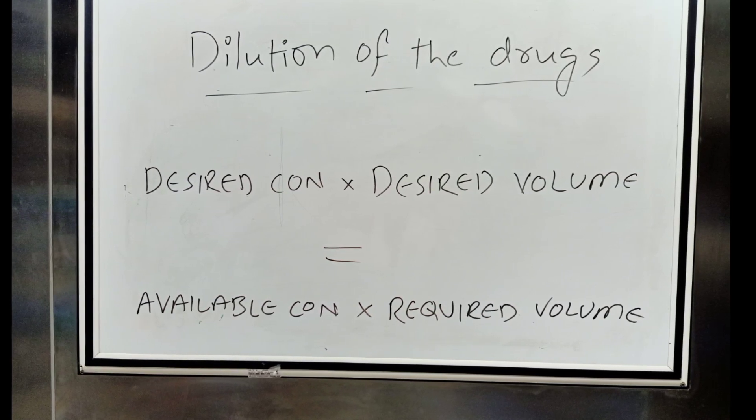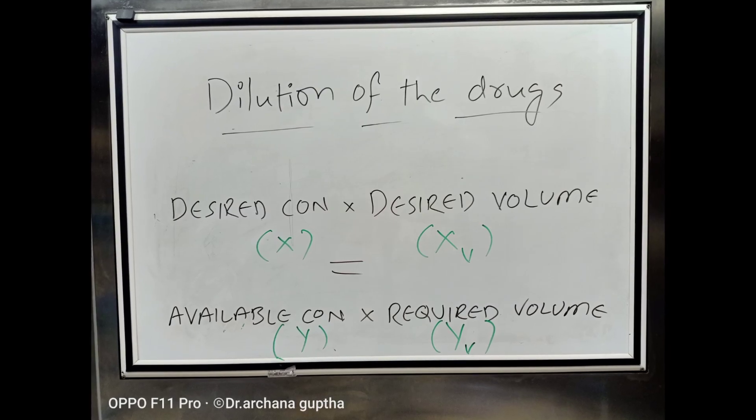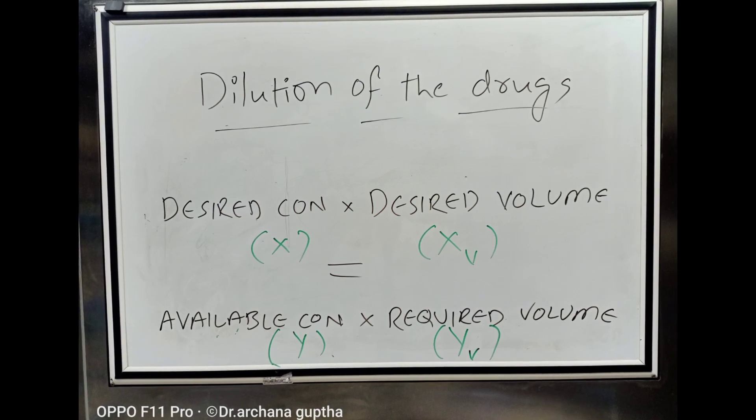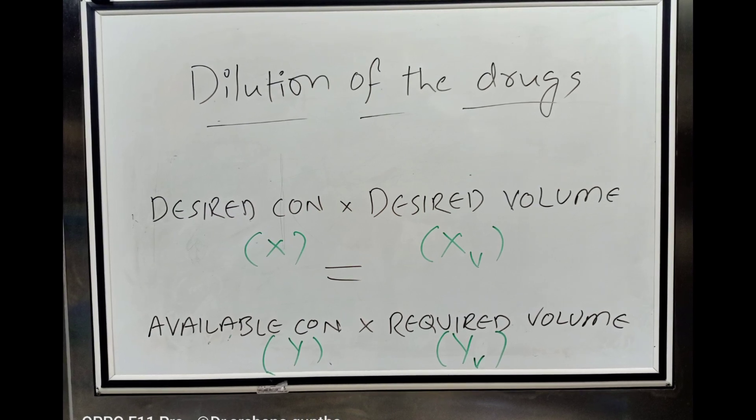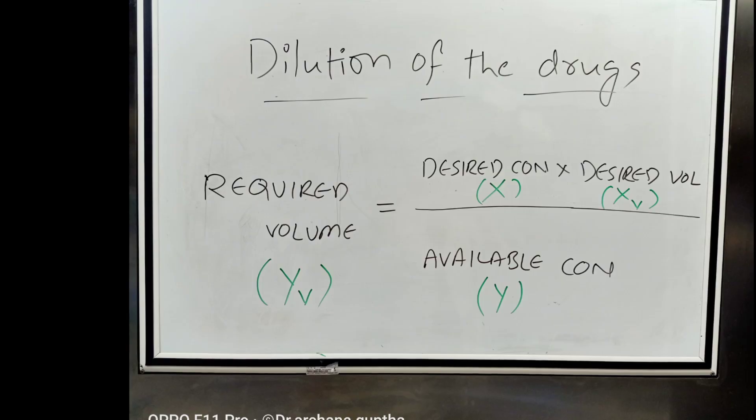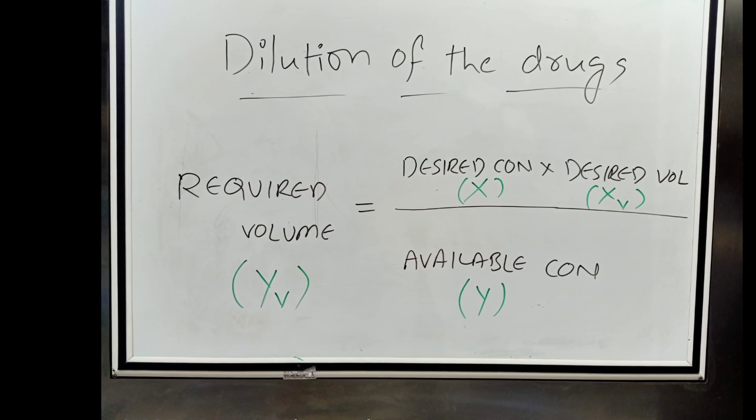Now, we can further simplify the above formula by assuming desired concentration as X, desired volume as XV, available concentration as Y, and required volume as YV. Therefore, X times XV equals Y times YV.